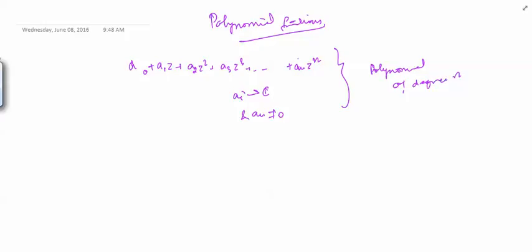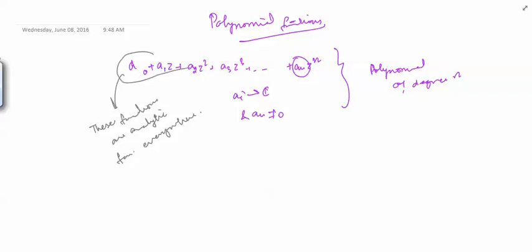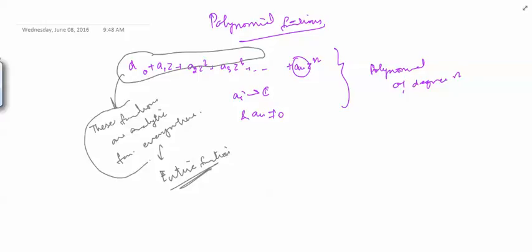The highest coefficient should be nonzero for the polynomial to have degree n. One special thing about polynomials is that they are analytic everywhere — these are entire functions. A function is said to be an entire function if it is analytic everywhere in the complex plane. So polynomial functions are entire functions — this is the first nicest thing about them.